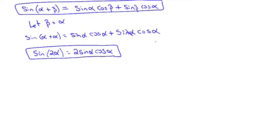So where cosine has three different identities — and you want to focus on the ones that give you cosine only in terms of cosine, or only in terms of sine — sine only gives you one identity, and it's in terms of both sine and cosine. But this identity has a lot of physical applications. These things can go in either direction: you can either break it apart or put it back together.